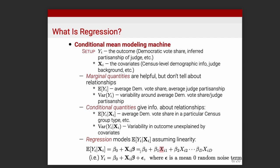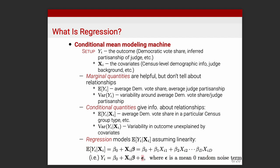Linear algebra is a vehicle and language for characterizing data and operations on data. We talked about the conditional expectation function we're trying to estimate, assuming a linear structure. There's another way of looking at this too, where we have epsilon — a mean-zero random noise term. These two representations of regression are equivalent: either as a conditional expectation function, or as an equation where the epsilons are things you can't model, things you don't observe — the errors in your model.